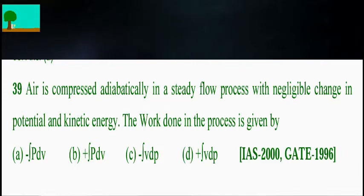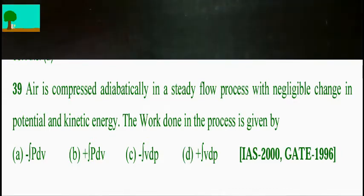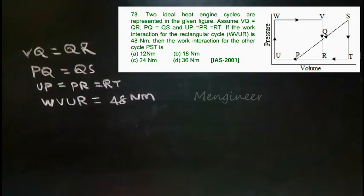As I said already, for steady flow, the work done formula is VDP. But here it is compression, so minus VDP. So C is the answer. Steady flow compression: minus VDP. Next problem.